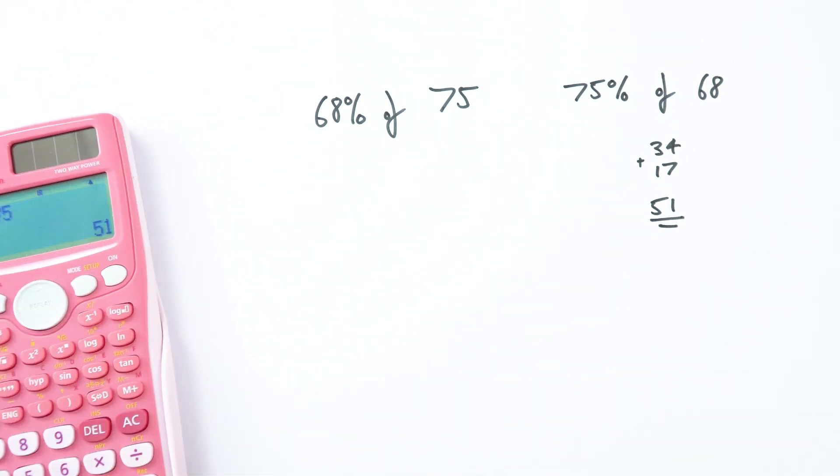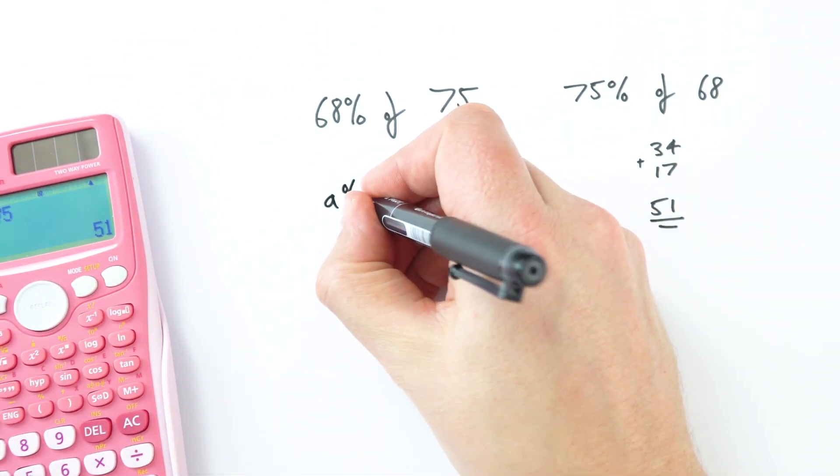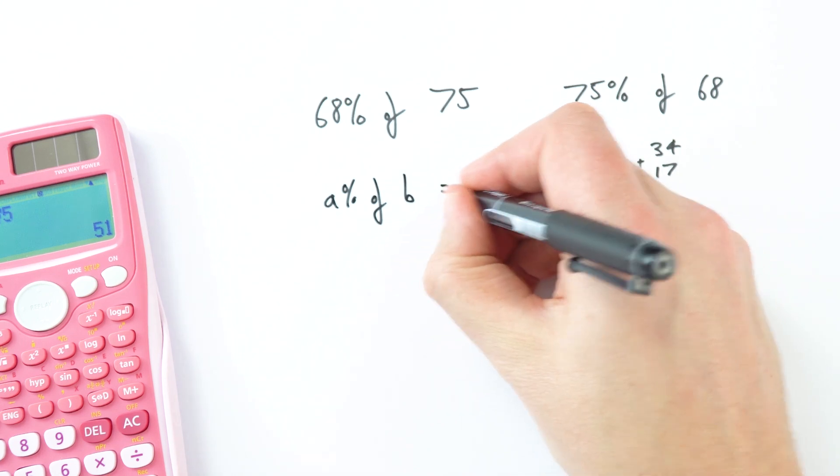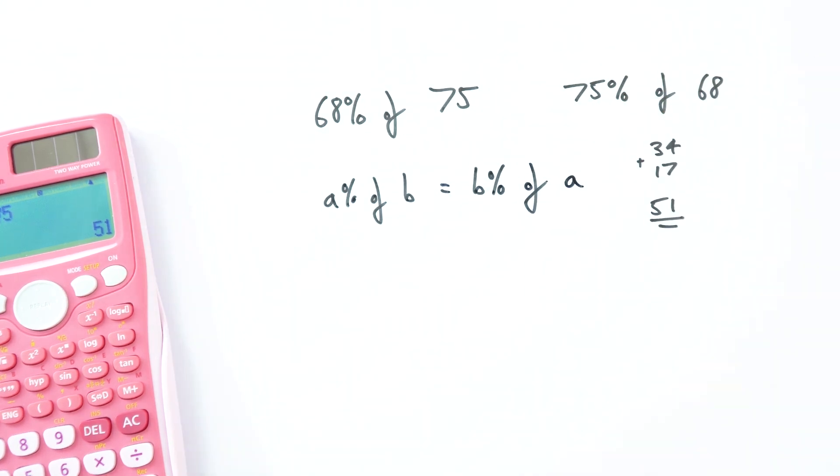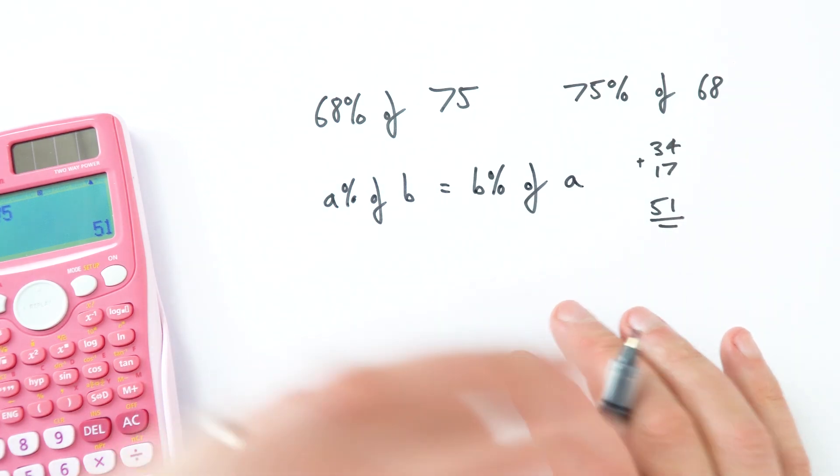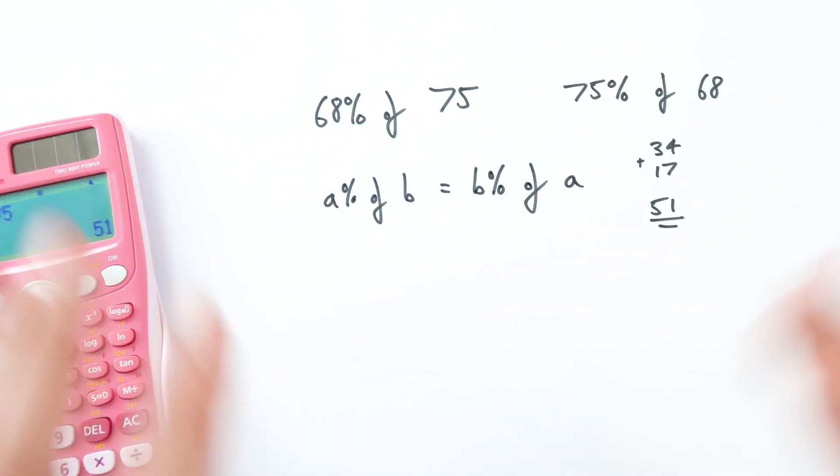So basically what we can say is that A percent of B is the same as B percent of A. Okay, and then you can obviously maybe not tell people about this, you can amaze them at parties with your mathematical ability.